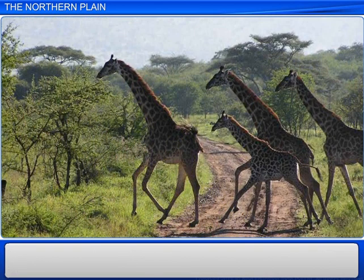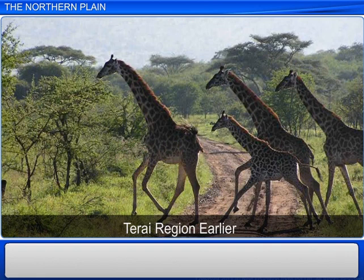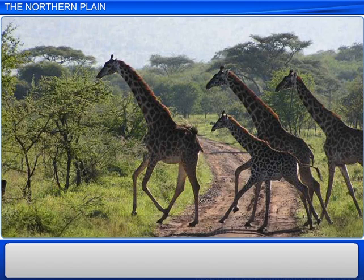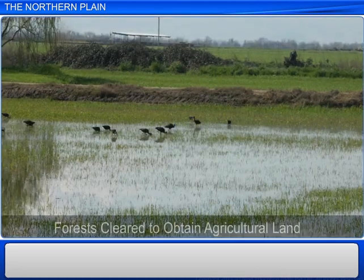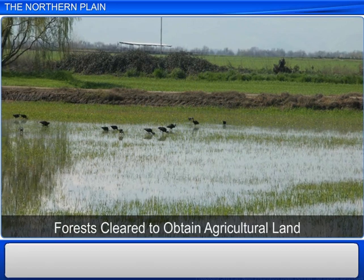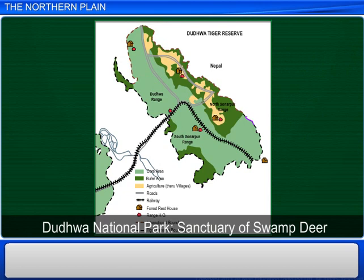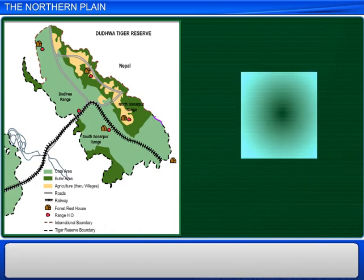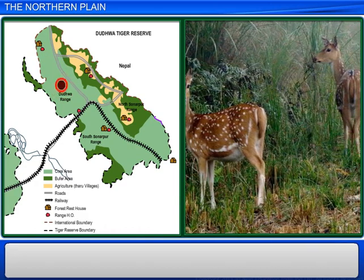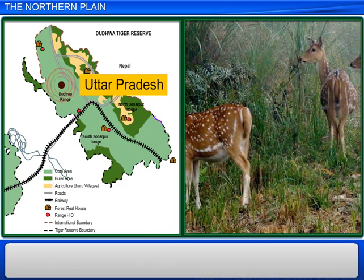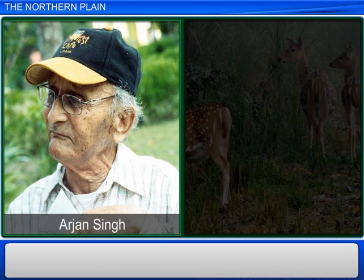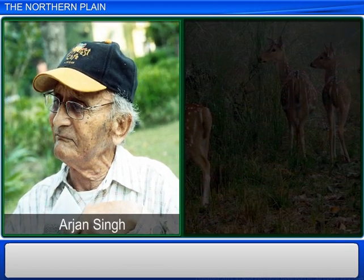Earlier, the Terai region was thickly forested and abundant with wildlife. However, urbanization has taken its toll, and forests have been cleared in some places to obtain agricultural land and in others to provide for people who migrated from Pakistan at the time of partition. You may have heard of the Dudhwa National Park, located in the plains of the Terai in Uttar Pradesh. Billy Arjan Singh, a famous conservationist, led the effort to establish Dudhwa as a sanctuary of the swamp deer.